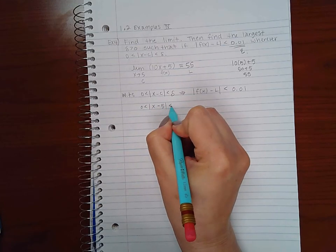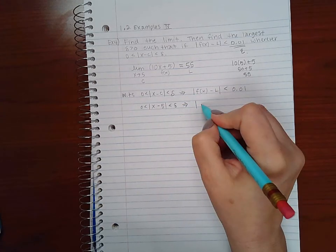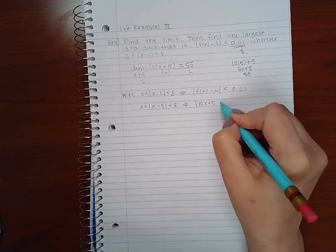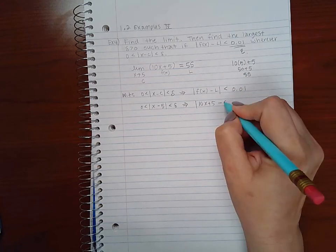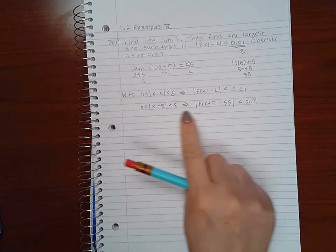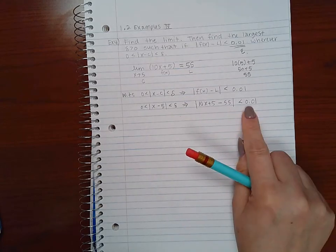So I'm going to plug in everything to figure out what is it exactly that I'm trying to show. I'm going to start off with my c which is 5, delta I'm trying to find, and my function is 10x plus 5 minus my L which is 55. So this is what I want to show.